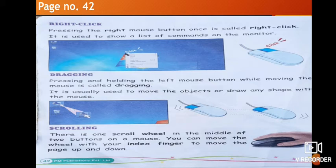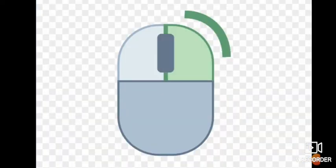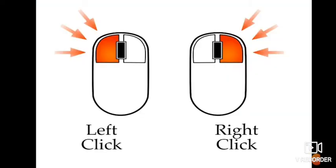Next, on page number 42, is right click. Pressing the right mouse button once is called right click. It is used to show a list of commands on the monitor. The green button on the right side is the right button. When you click it, it shows a list of commands or options.